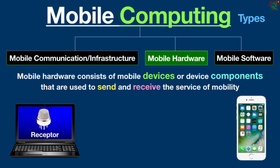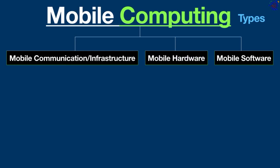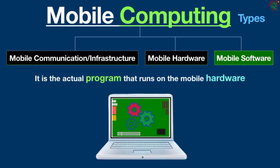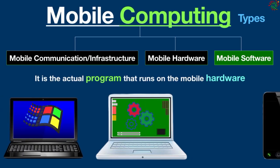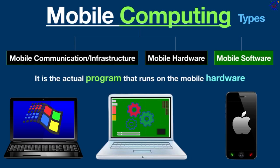They don't have to wait until one device has finished communicating for the other device to initiate communications. Finally, mobile software is the actual program that runs on mobile hardware. It deals with the characteristics and requirements of mobile applications — you can say it is the engine of the mobile device. In simple terms, it is the operating system of any computing device and the crucial component that operates the mobile device. For a laptop this may be Windows, Linux, or Mac OS, and for a smartphone it may be Android or iOS.